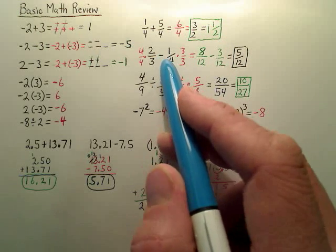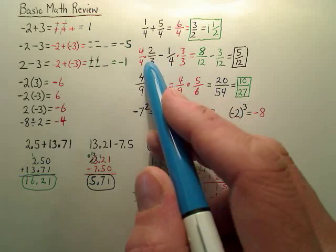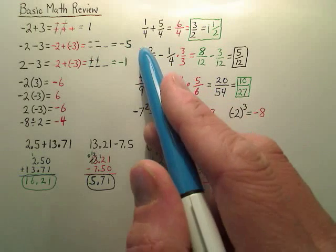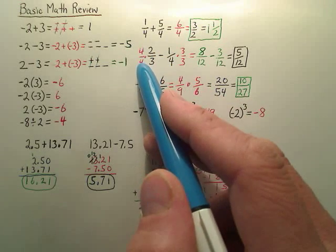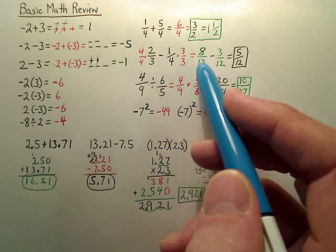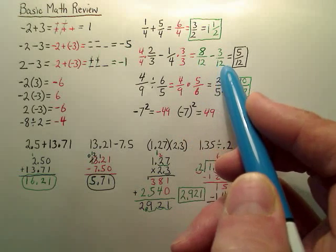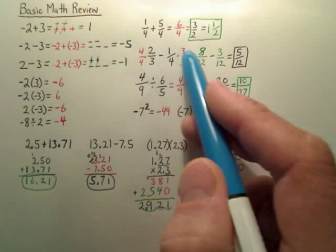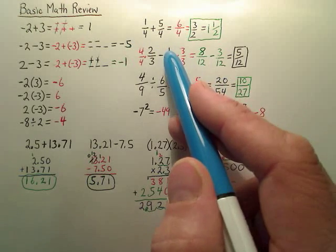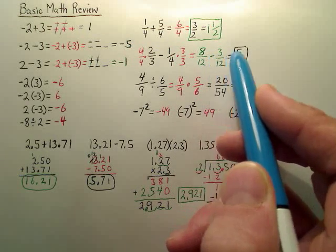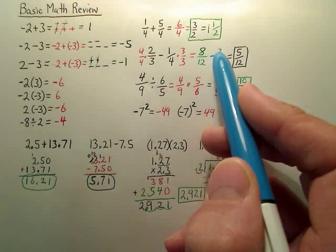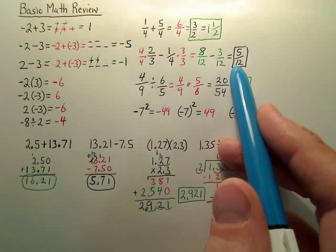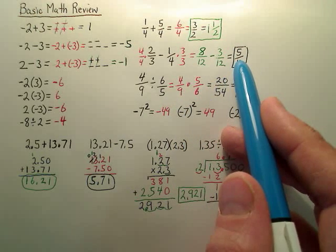When you subtract fractions, you have to get the same denominators. In this example we don't have that, so I multiplied top and bottom by 4 here, and top and bottom by 3 here — thus I now have 12s on both bottoms. 4 times 2 is 8, and 1 times 3 is 3. When you subtract the tops, you're done. You cannot reduce. Reduce if you can.